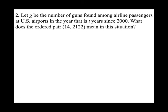Let G be the number of guns found among airline passengers at US airports in the year T years since 2000. What does the ordered pair (14, 2122) mean? We have two variables: G (number of guns) and T (years). Since T equals 0 at year 2000, the year affects the number of guns found. So T is the explanatory variable and G is the response variable. The first value 14 represents T, and 2,122 represents G, the number of guns found.